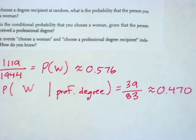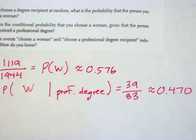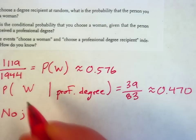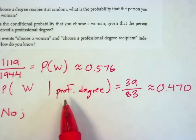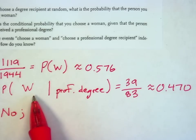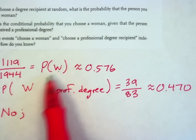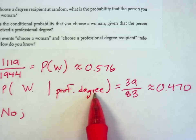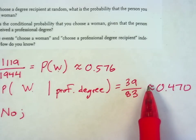So are these independent? And how do I know? So the answer is no, these are not independent. And the reason that I know is if selecting a woman and having a professional degree, if those were independent of one another, these two probabilities would match.